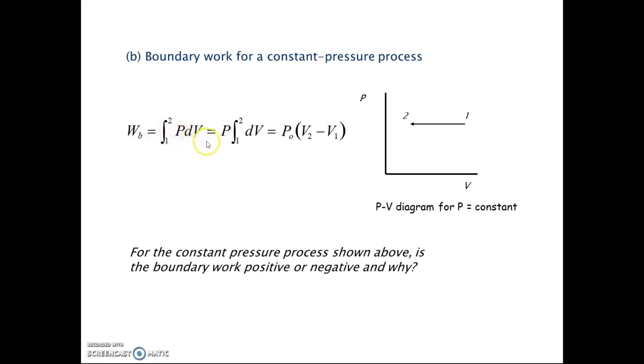PdV equals - this time the pressure is constant, so we put P outside, and dV is changes of volume. Therefore we get P times V2 minus V1. So we have values.